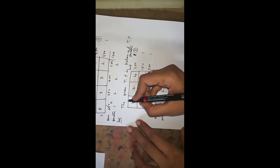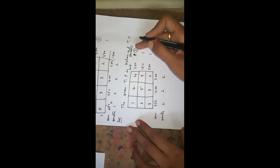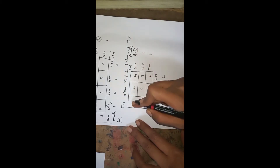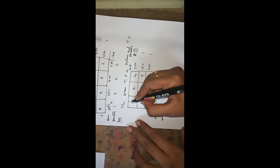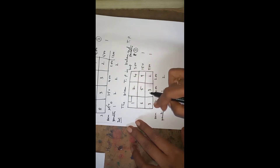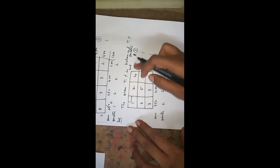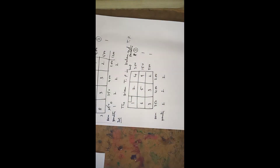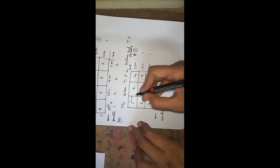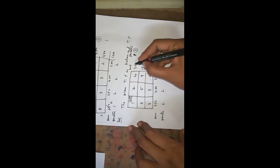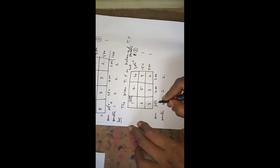Since the highest penalty is in the first row, enter into the first row. The least cost element in the first row is 1, so put a box there. See the corresponding demand and supply: 300 and 350. The minimum is 300, so we allocate 300. Supply remaining becomes 50.